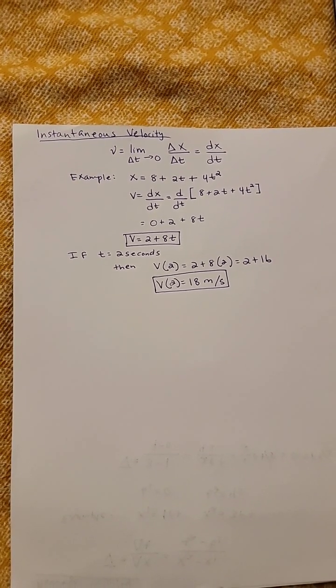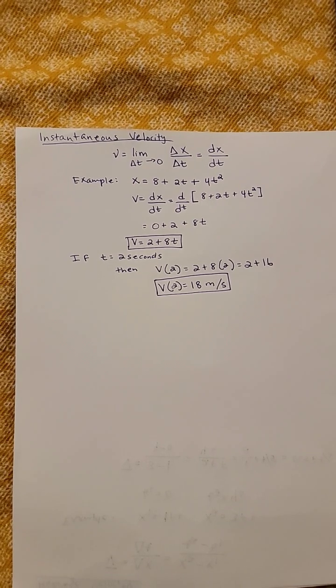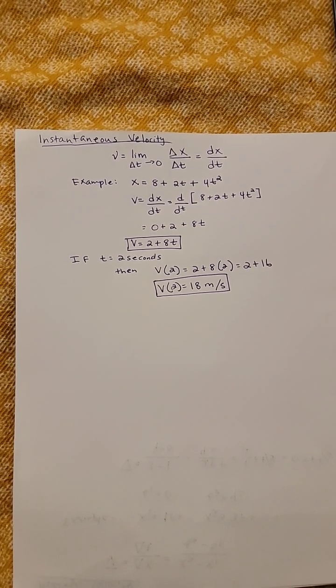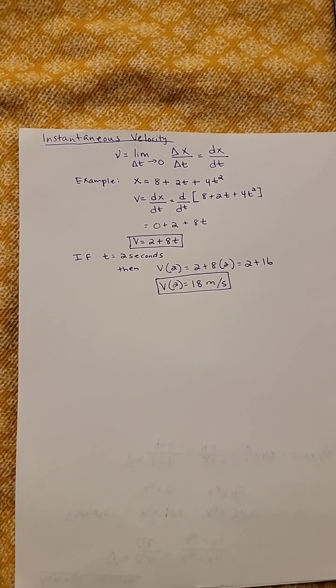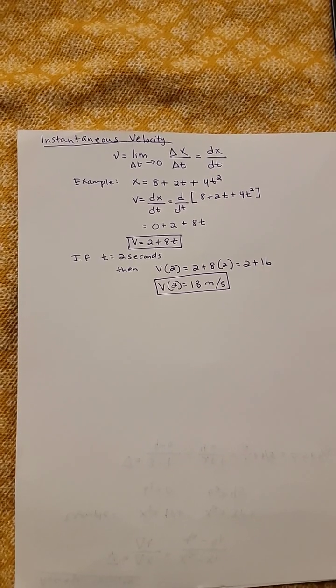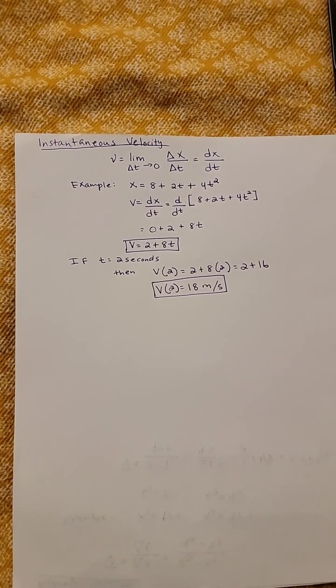If we assume that time equals 2 seconds, then if we substitute 2 seconds for t in our velocity equation, we obtain 18 meters per second.